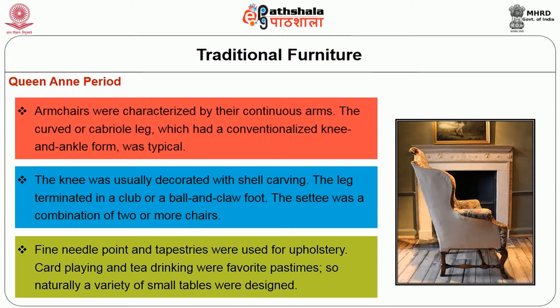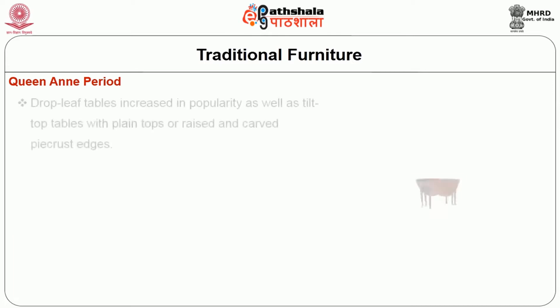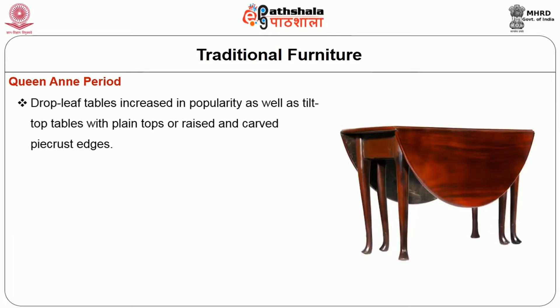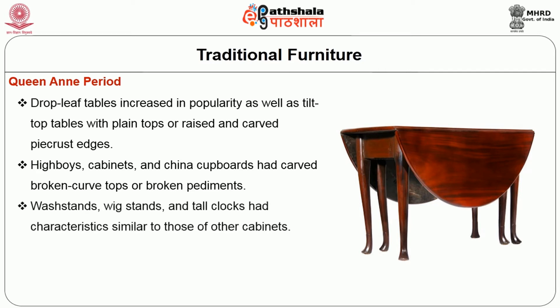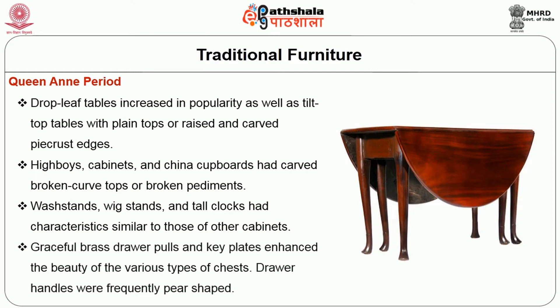Fine needlepoint and tapestries were used for upholstery. Card playing and tea drinking were favorite pastimes, so naturally a variety of small tables were designed. Drop leaf tables increased in popularity as well as tilt top tables with plain tops or raised and carved pie crust edges. High boys, cabinets, and china cupboards had carved broken curved tops or broken pediments. Wash stands, wick stands, and tall clocks had similar characteristics. Graceful brass drawer pulls and key plates enhanced the beauty of the various types of chests; drawer handles were frequently pear-shaped.